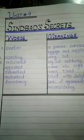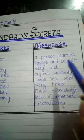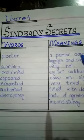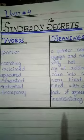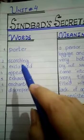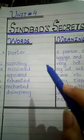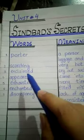Word number one: 'porter' — a person who carries luggage and supplies, someone who takes people's luggage and delivers it to given addresses. Word number two: 'scorching' — means very hot. Word number three: 'exclaimed' — means to cry out suddenly.